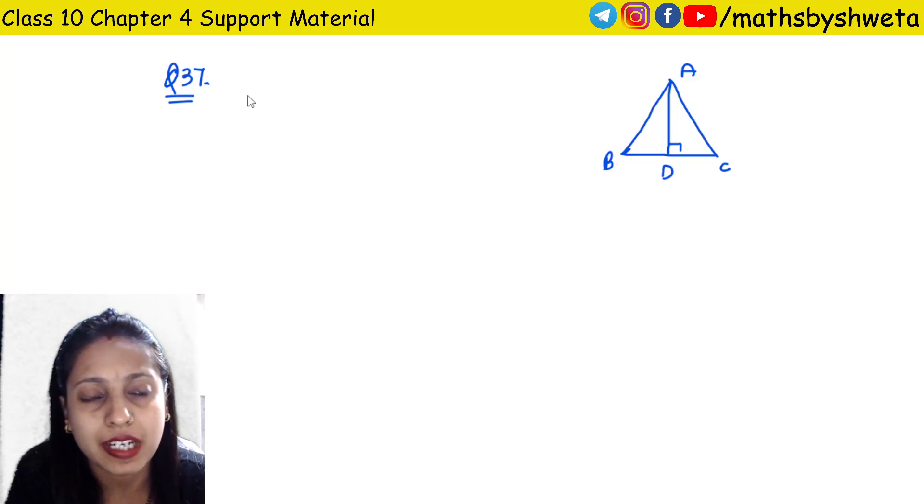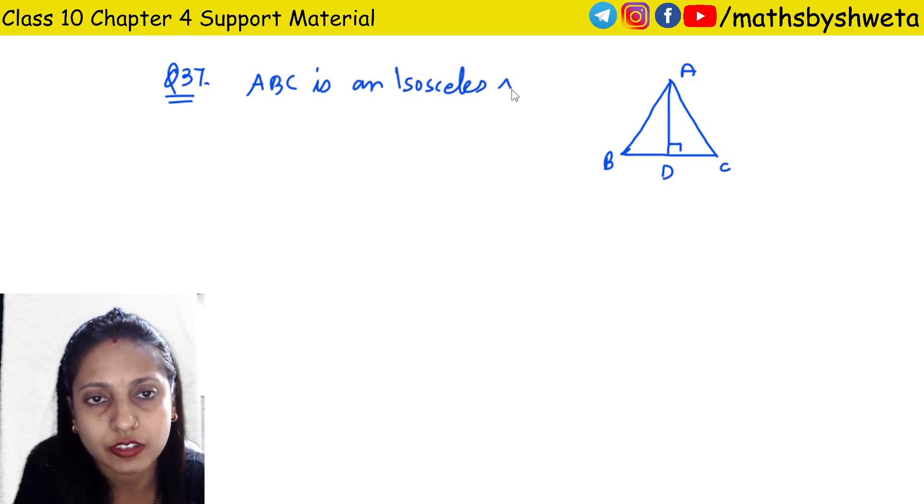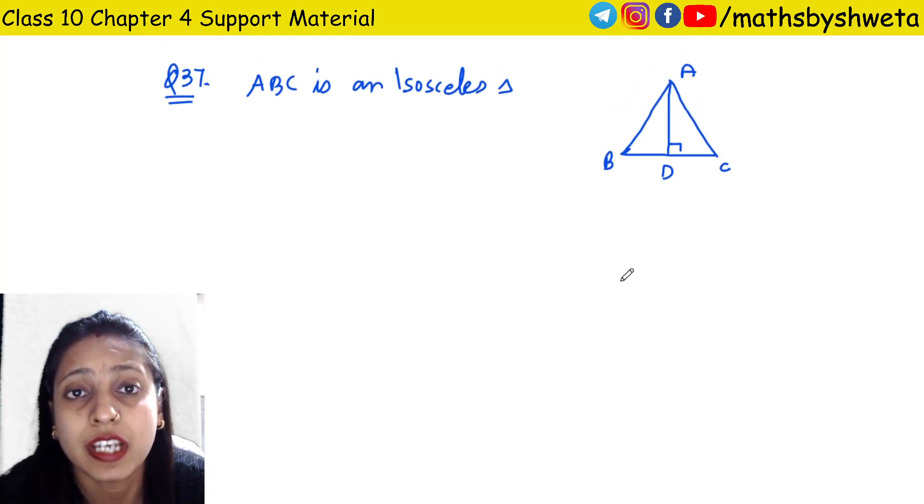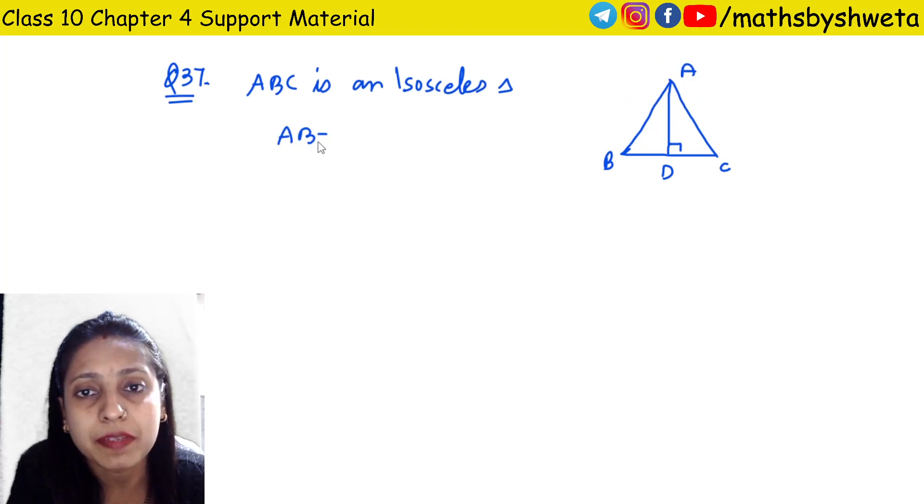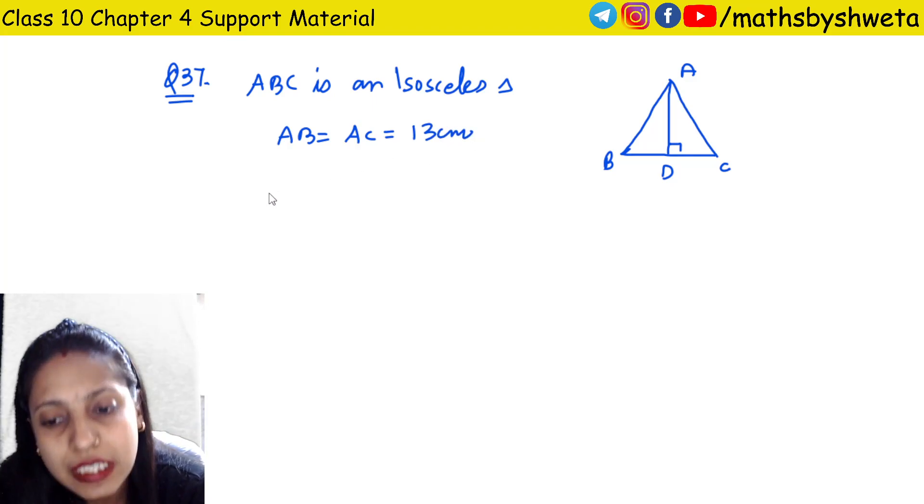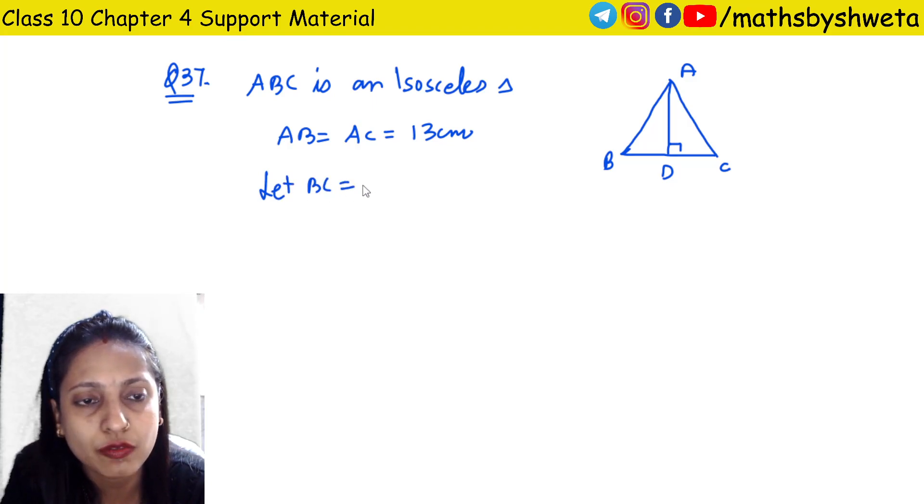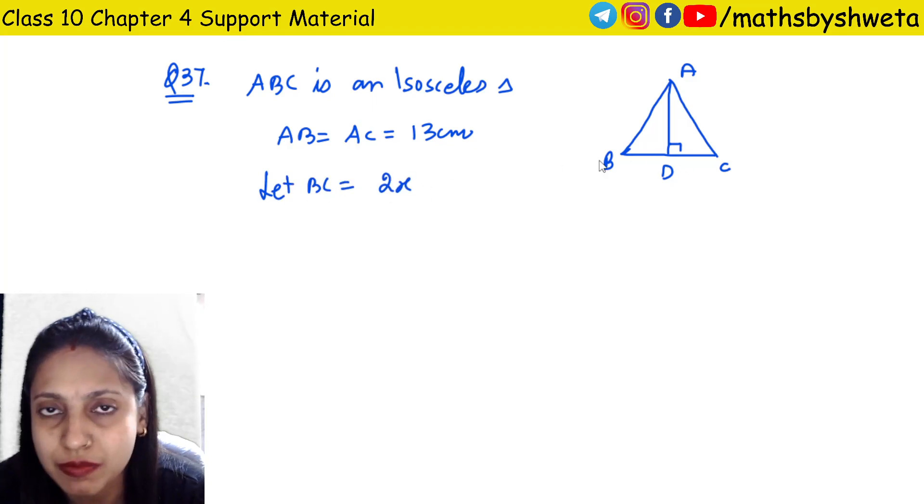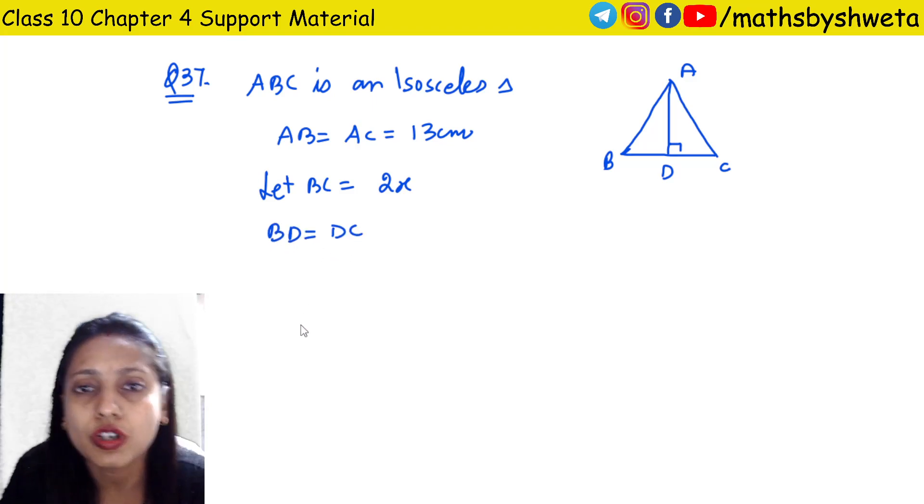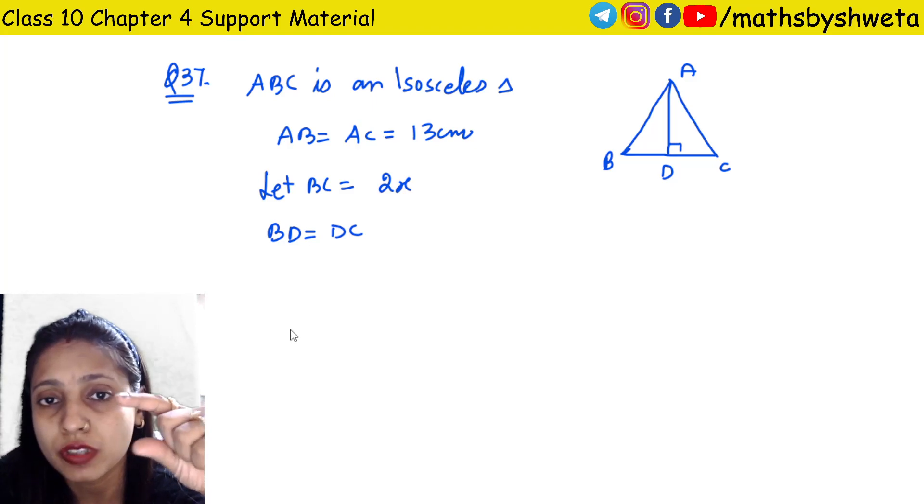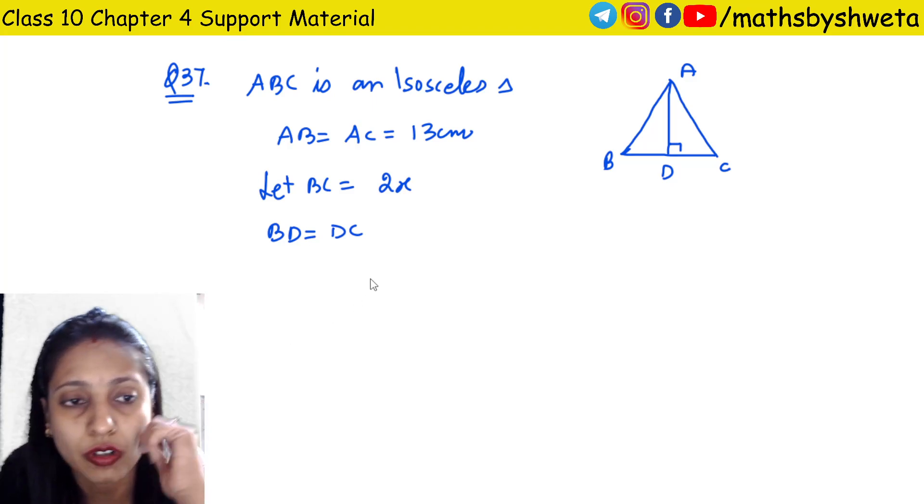ABC is an isosceles triangle. AB equals AC equals 13 cm. BC I do not know, so let's let BC be 2x. BD will be x, so BC is 2x. Now you will see that BD will be equal to DC because AD is a perpendicular, so it will bisect into equal parts.